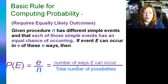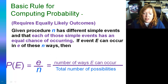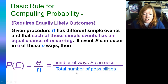Let's get going on this. Just to review, the basic rule for computing probability — this means that there are equally likely outcomes. If you want the probability of an event, it's the number of ways the event can occur over the total number of possibilities. Hence why we had one whole section on how to count up the number of ways something can happen.